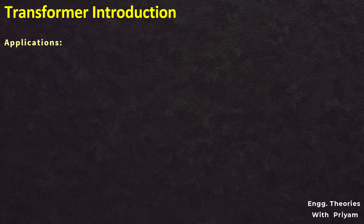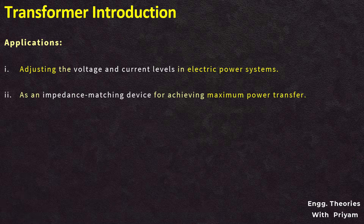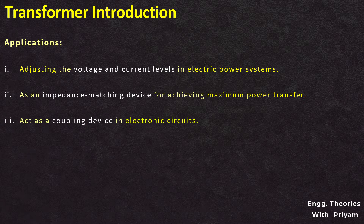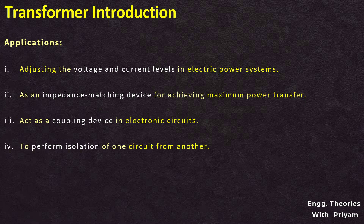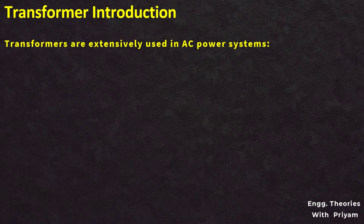The major uses of an electrical transformer include: adjusting voltage and current levels in electric power systems; acting as an impedance matching device for achieving maximum power transfer in low-power electrical and control circuits; acting as a coupling device in electronic circuits; and performing the isolation of one circuit from another, since the primary and secondary of the transformer are not electrically connected. Transformers are also used for voltage and current measurements — these are known as instrument transformers.